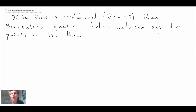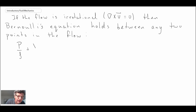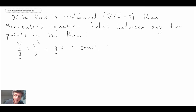This more general form of Bernoulli's equation applies when you have irrotational flow. It gives a little bit more flexibility because evaluating P over rho plus V squared over 2 plus GZ equals a constant — only now that constant can apply anywhere in the flow, not just along a single streamline.